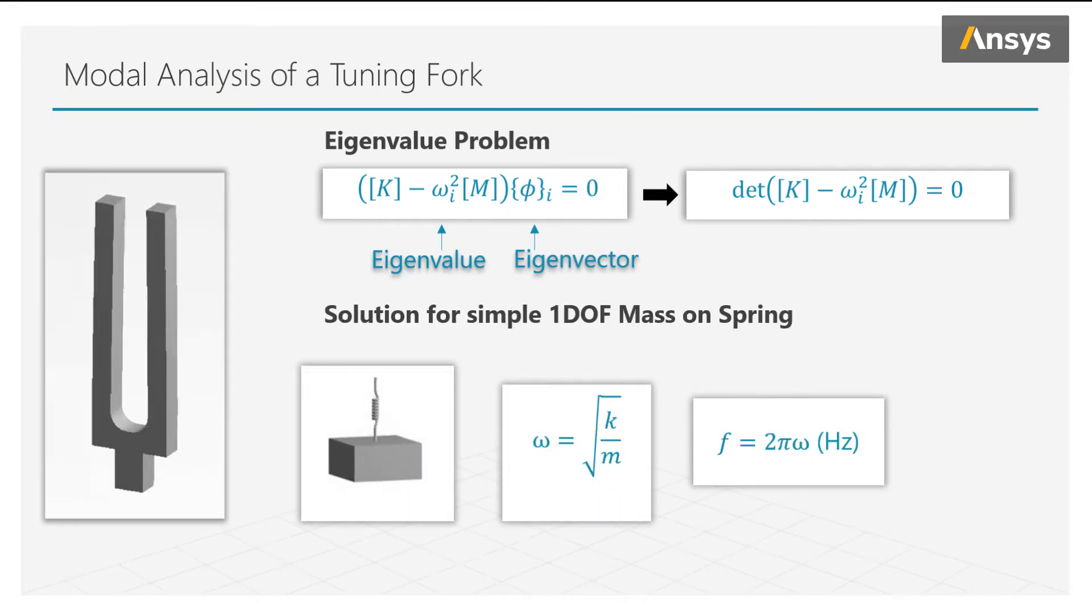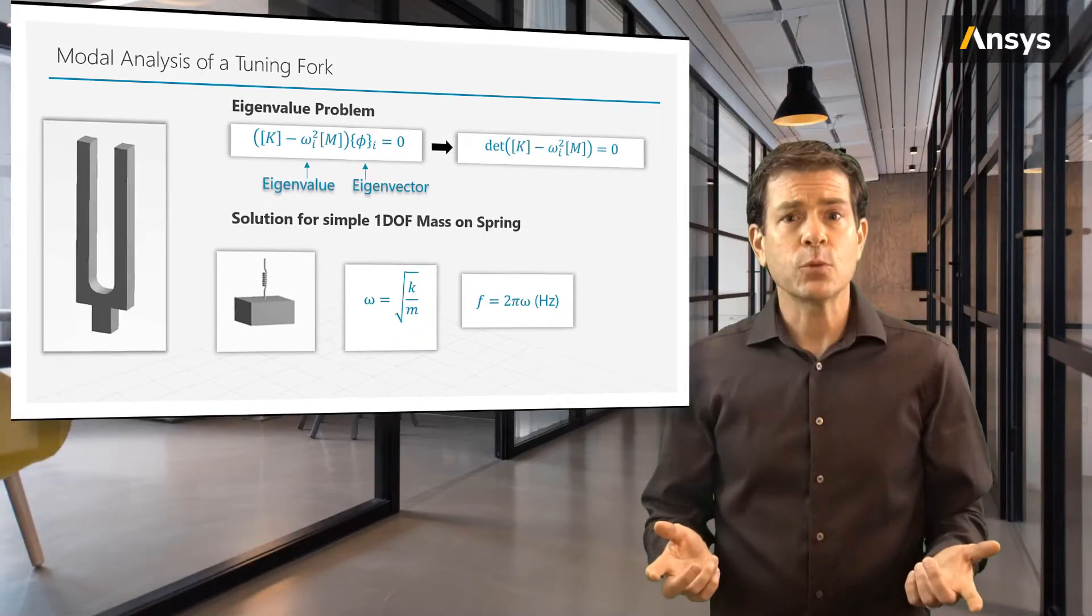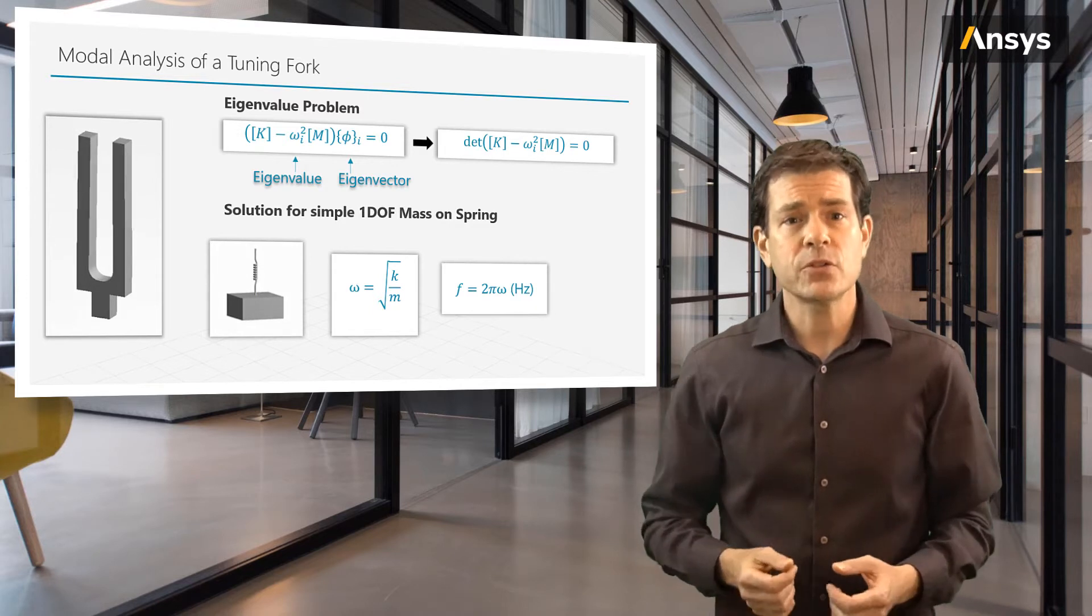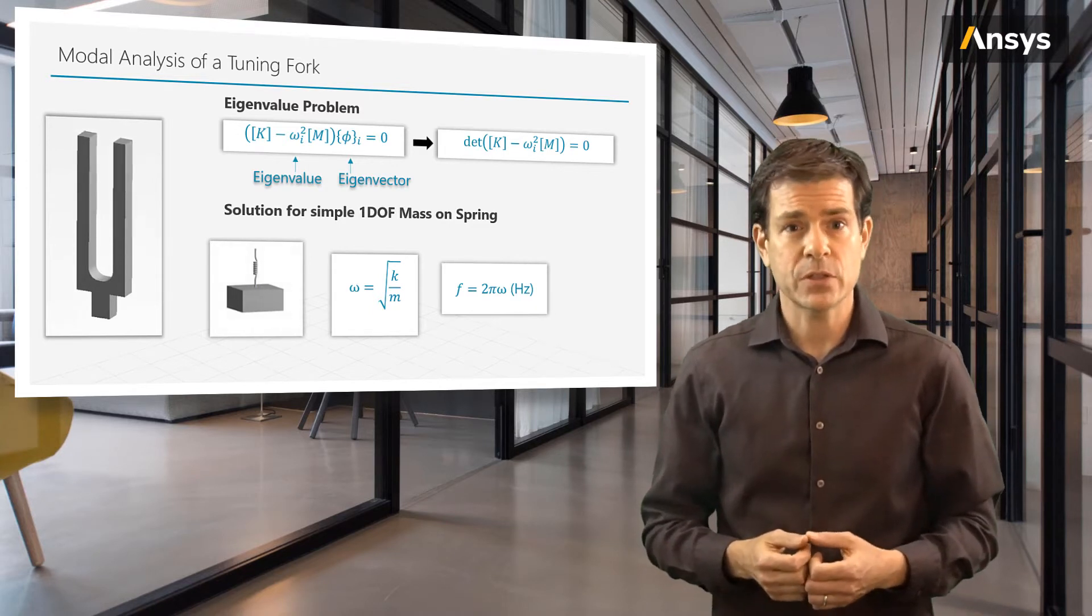But if we solve this equation on a single degree of freedom system, like a mass on a spring, and that mass on a spring can just oscillate in one direction, the solution can simply be solved using algebra, giving the natural frequency as the square root of the stiffness k over the mass m. Now we can keep this equation in mind when thinking of more complex systems, as it can help us intuitively understand the expected behavior of the system.